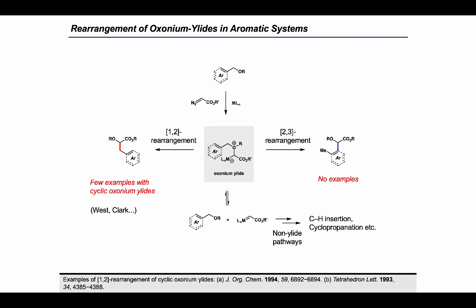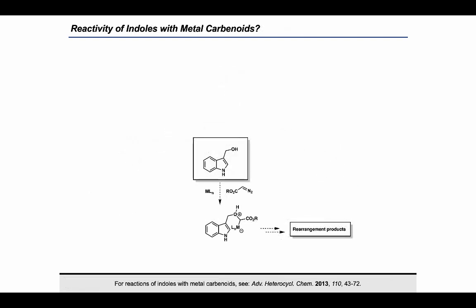The only few reports of 1,2 rearrangement known are limited to cyclic oxonium ylides, whereas there are no examples at all for aromatic 2,3 rearrangements using oxonium ylides. So this is definitely an underdeveloped area, and we believe developing catalytic methods to access these products through such reactive intermediates will be really useful from a synthetic perspective. With that in mind, we started thinking about such catalytic rearrangements in the context of indole functionalization as an initial target, mainly because it's such a biologically relevant scaffold present in a variety of pharmaceutically active compounds. For this, we imagined generating oxonium ylides from the corresponding indole carbinol and diazo compound, which could potentially undergo rearrangements to give functionalized indole.